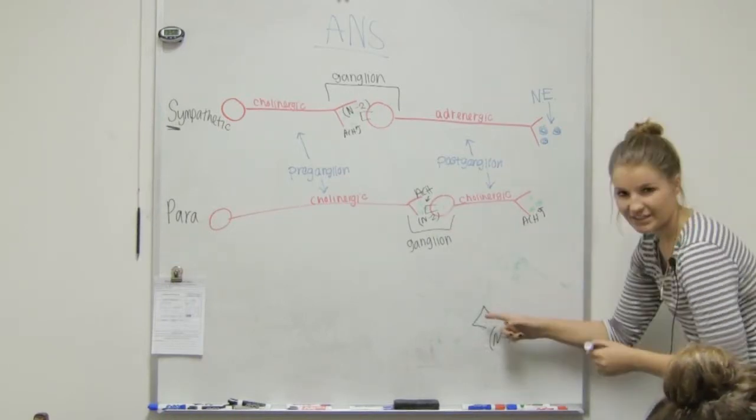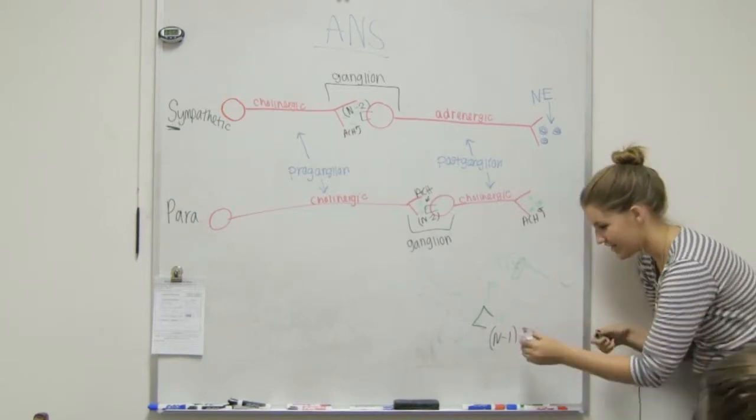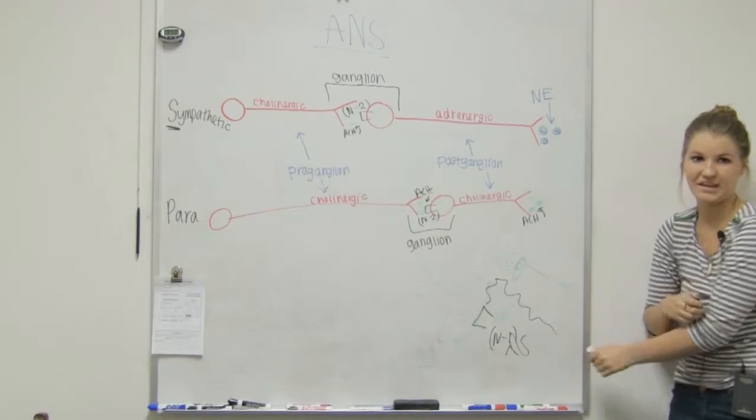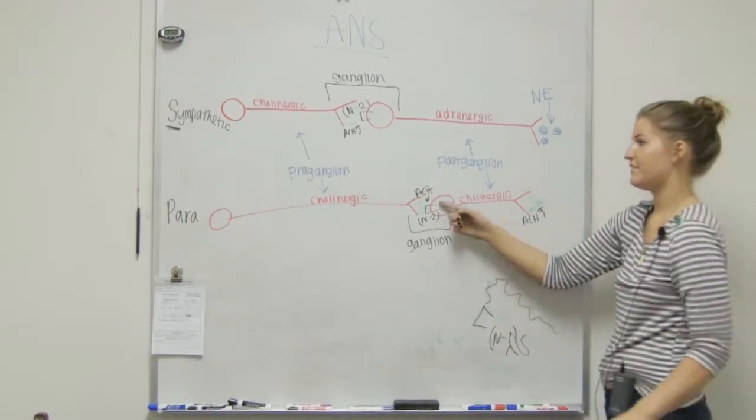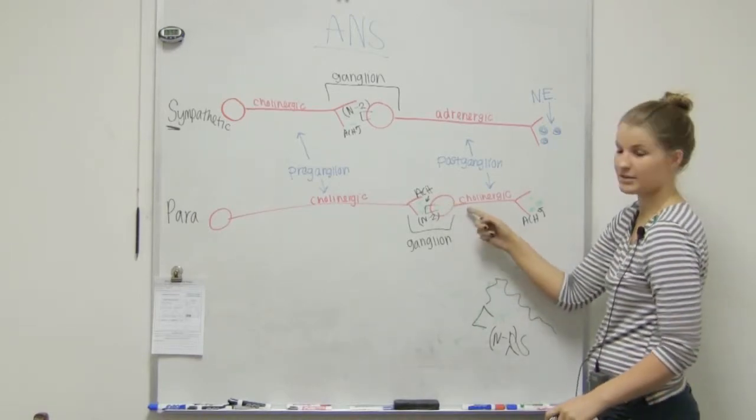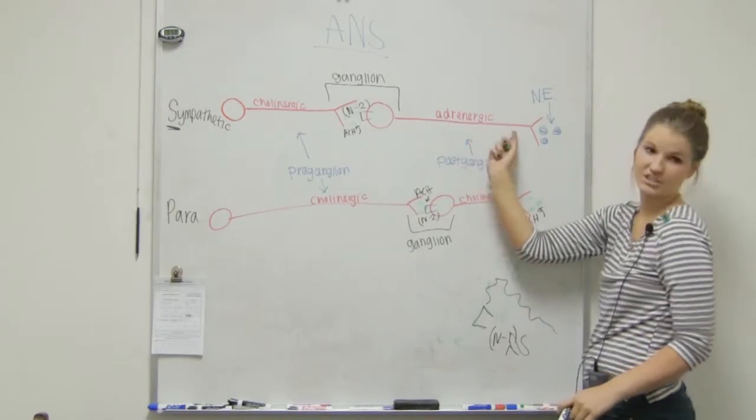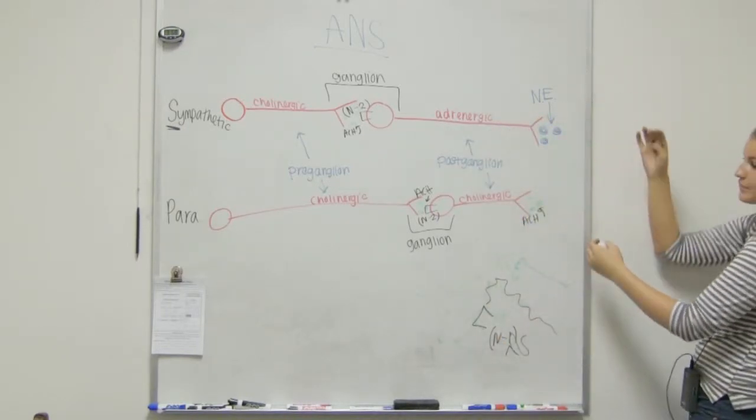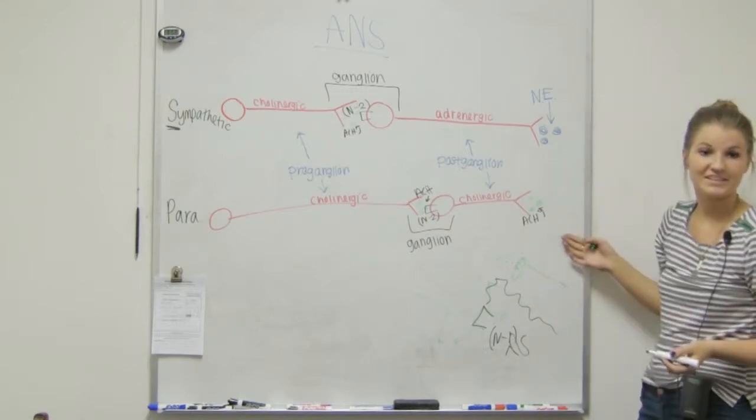And then when that synapses, just like here, we had a chain reaction, then we had another action potential, and then it went on to then affect something else. This is going to affect the next neuron, whether it's a cholinergic or an adrenergic. And when those are affected, then they're going to secrete different things. These are now our effectors.